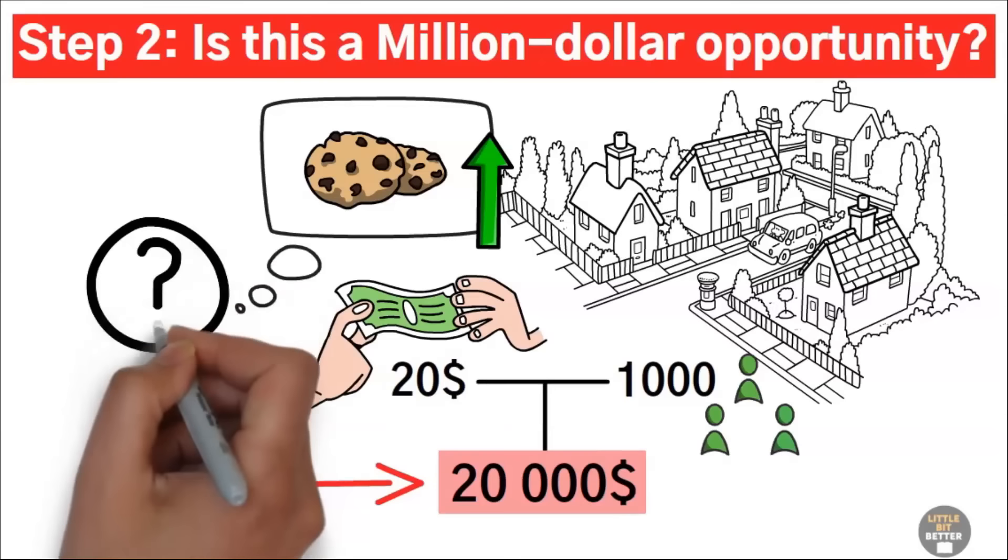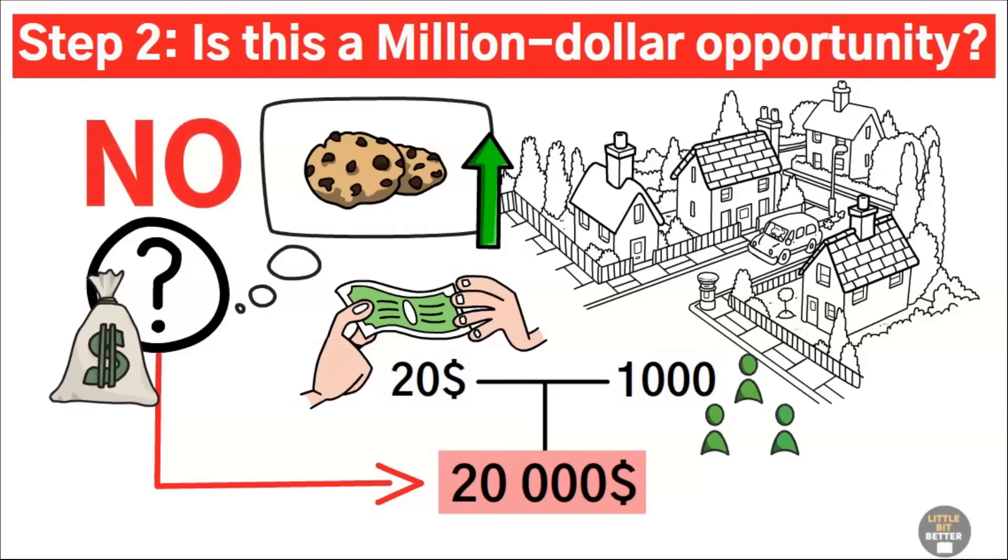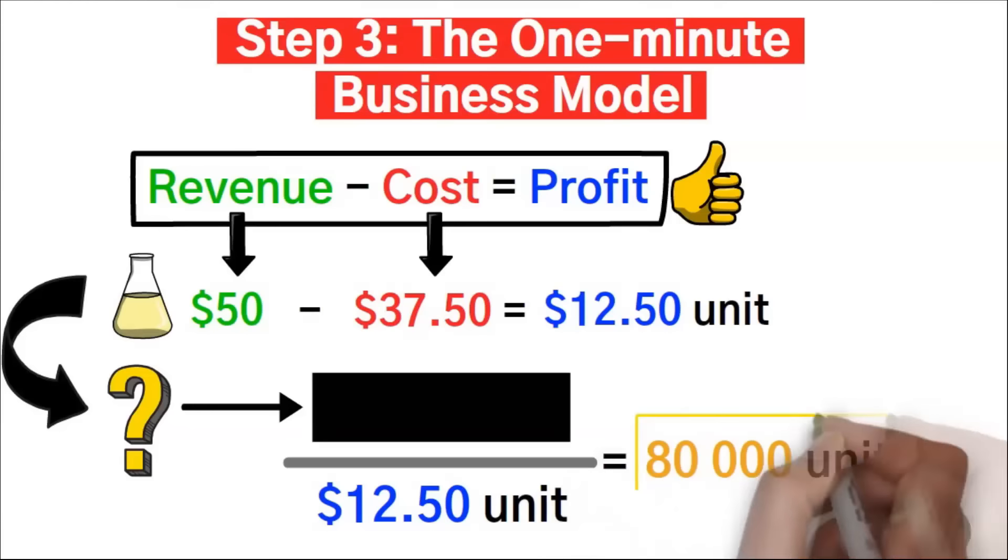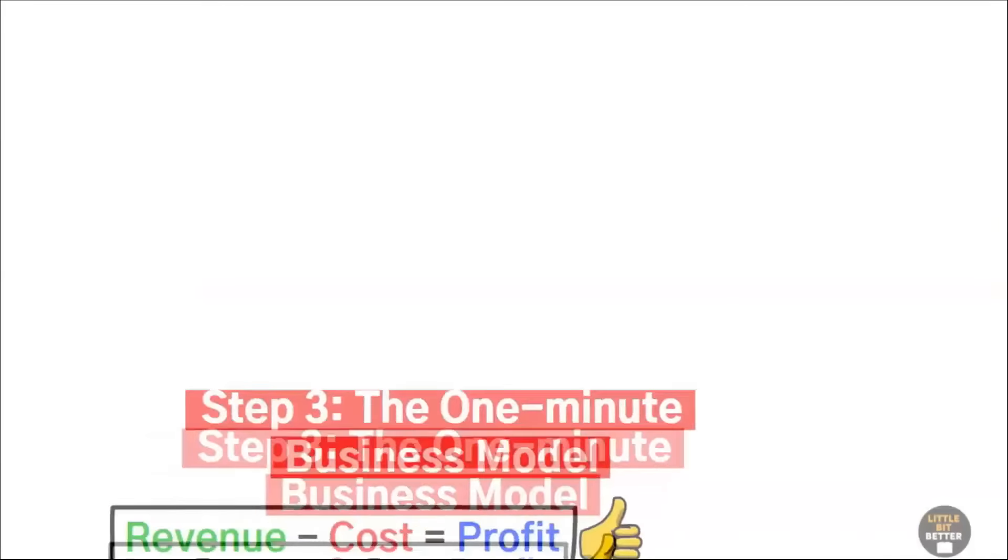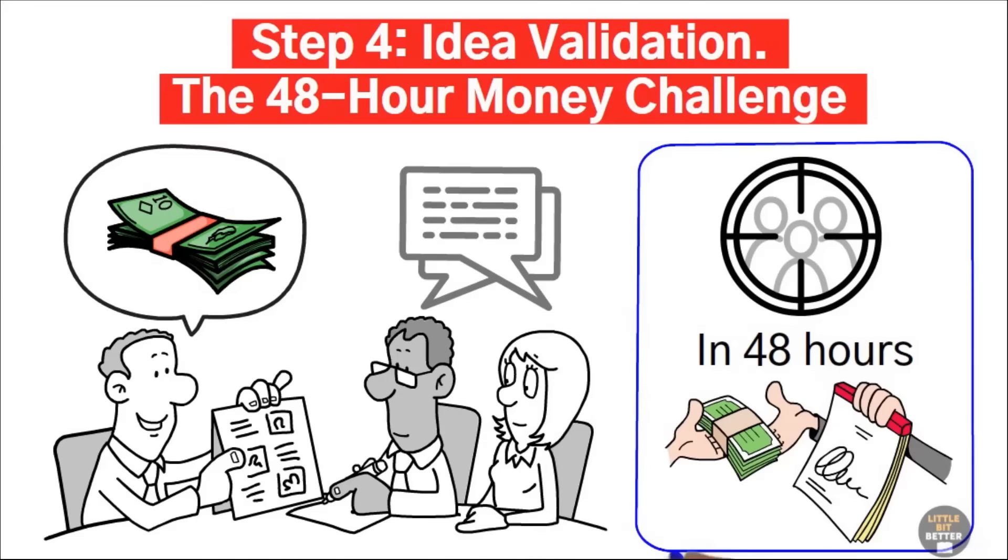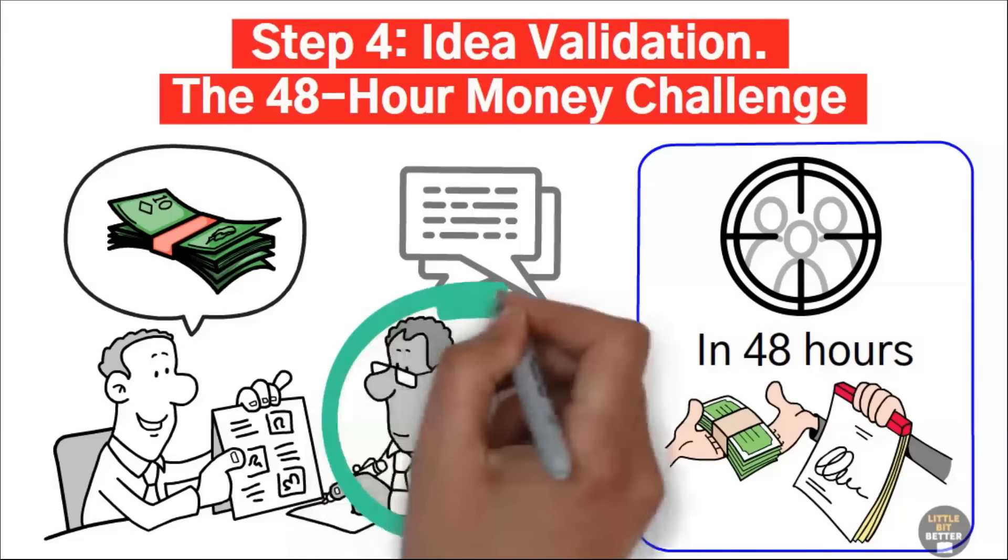Number two, we checked if the idea had a million-dollar potential or not. Number three, we calculated how many units we needed to sell to achieve one million dollars in profit. Number four, we validated the idea with the 48-hour money challenge.